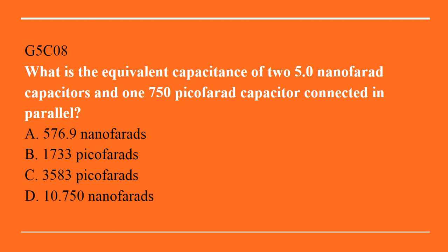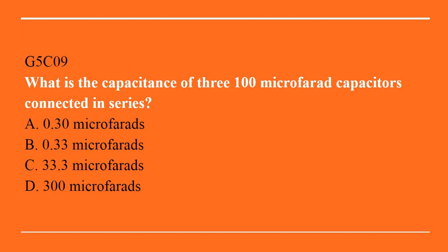G5C08: what is the equivalent capacitance of two 5.0 nanofarad capacitors and one 750 picofarad capacitor connected in parallel? A. 576.9 nanofarads. B. 1733 picofarads. C. 3583 picofarads. Or D. 10.750 nanofarads. The answer is D: 10.750 nanofarads. G5C09: what is the capacitance of three 100 microfarad capacitors connected in series? A. 0.30 microfarads. B. 0.33 microfarads. C. 33.3 microfarads. Or D. 300 microfarads. Correct answer is C: 33.3 microfarads.